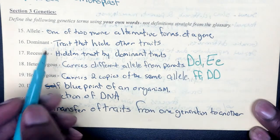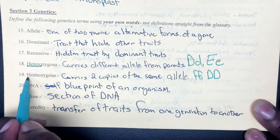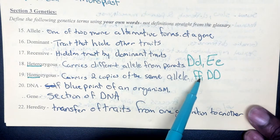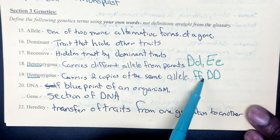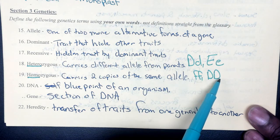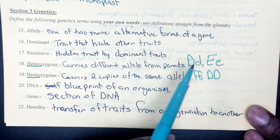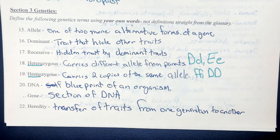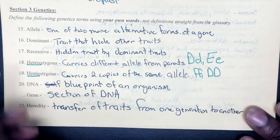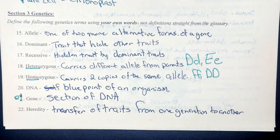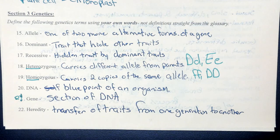Homozygous means the same — it carries two copies of the same allele, either two lowercase letters (recessive) or two capital letters (dominant). DNA is the blueprint of an organism. A gene is a section of DNA found in the chromosome. Heredity is the transfer of traits from one generation to another.